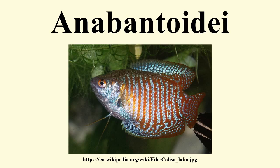The labyrinth organ, a defining characteristic of fish in the suborder Anabantoidei, is a much-folded superbranchial accessory breathing organ. It is formed by vascularized expansion of the epibranchial bone of the first gill arch and used for respiration in air. This organ allows labyrinth fish to take in oxygen directly from the air, instead of taking it from the water through use of gills. The labyrinth organ helps the inhaled oxygen to be absorbed into the bloodstream.